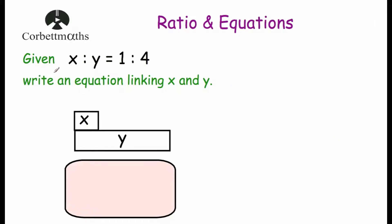Let's have a look at our first question. Given the ratio of x to y is 1 to 4, write an equation linking x and y. So x and y represent two numbers and we know that whenever we write them as a ratio and simplify it we get 1 to 4. In other words the value for y is 4 times larger than the value for x. So x could be 100, y could be 400, or x equals 5 and y equals 20, or x equals 2 and y equals 8.